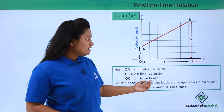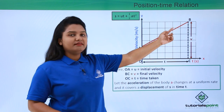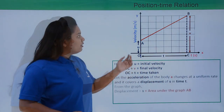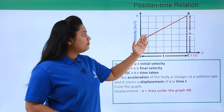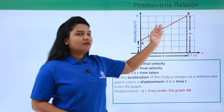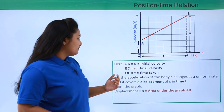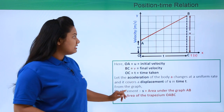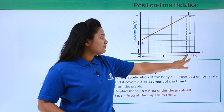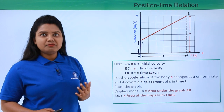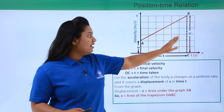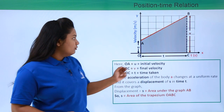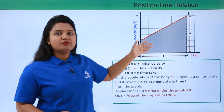The acceleration of the body changes at a uniform rate, as is apparent from the graph, and the displacement covered by the body in time t we will take as s. From the graph, the displacement of the body is given by the area under the curve AB. So s, the displacement, is given by the area of the trapezium OABC. The shaded region gives us the value of the displacement.